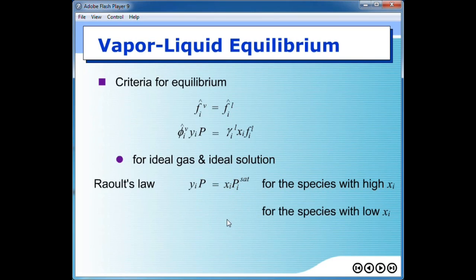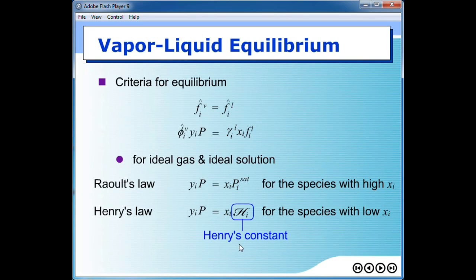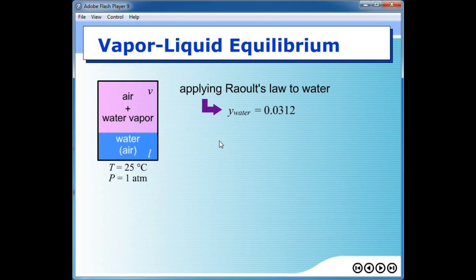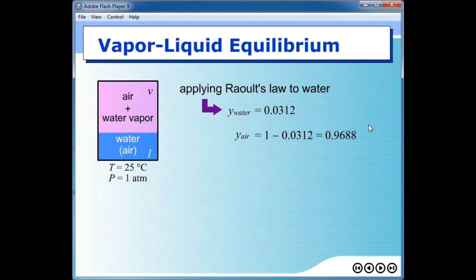In order to overcome this problem, there is another equation proposed by Henry. This equation is called Henry's law, written in a similar form to Raoult's law, except that the vapor pressure is replaced by a constant called Henry's constant. This constant must be found experimentally and is reported in many thermodynamics handbooks. Applying Henry's law to the earlier example: previously we obtained the mole fraction of water to be 0.03, so the mole fraction of air should be 1 minus 0.03, giving about 0.97.